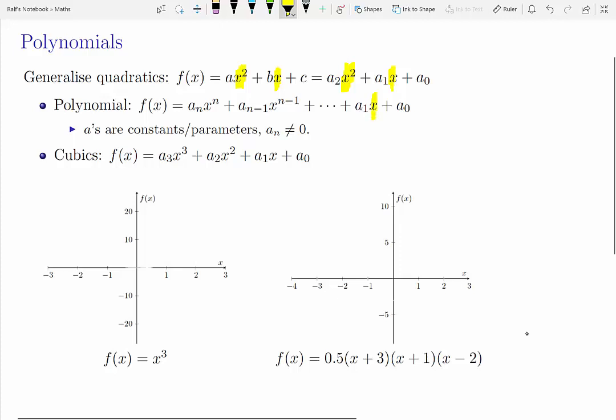We sometimes precede these with a2 and a1, the coefficients, and then polynomials are just generalizations. We may have x to the 3, x to the 4, in general x to the n and smaller powers, so x to the n minus 1, x to the n minus 2, and so forth.